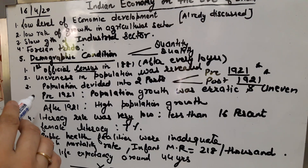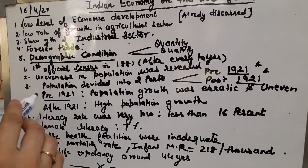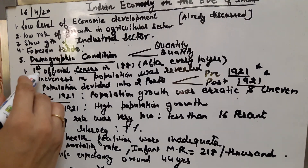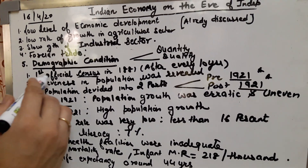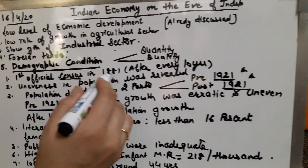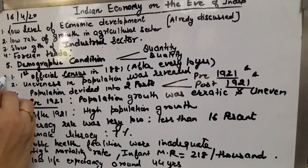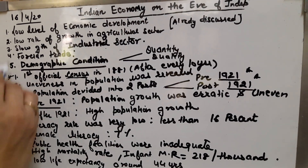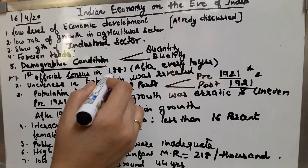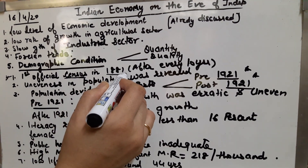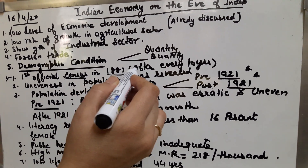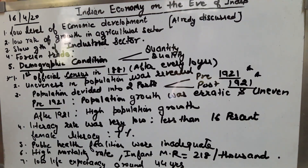A one-mark question which can be asked here is: when was the first official census conducted? Please note this down — it is very important for a 1-mark MCQ. The first official census was conducted in 1881, and it has been conducted after every 10 years since then.